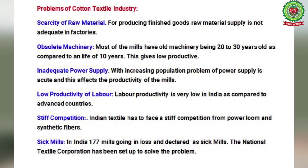The third problem is inadequate power supply. With increasing population, the problem of power supply is becoming acute and affects the productivity of mills. Fourth is low productivity of labor — labor productivity is very low in India compared to advanced countries, with slow work processes. Fifth is stiff competition: Indian cotton textile faces stiff competition from power-loom products and synthetic fibers.